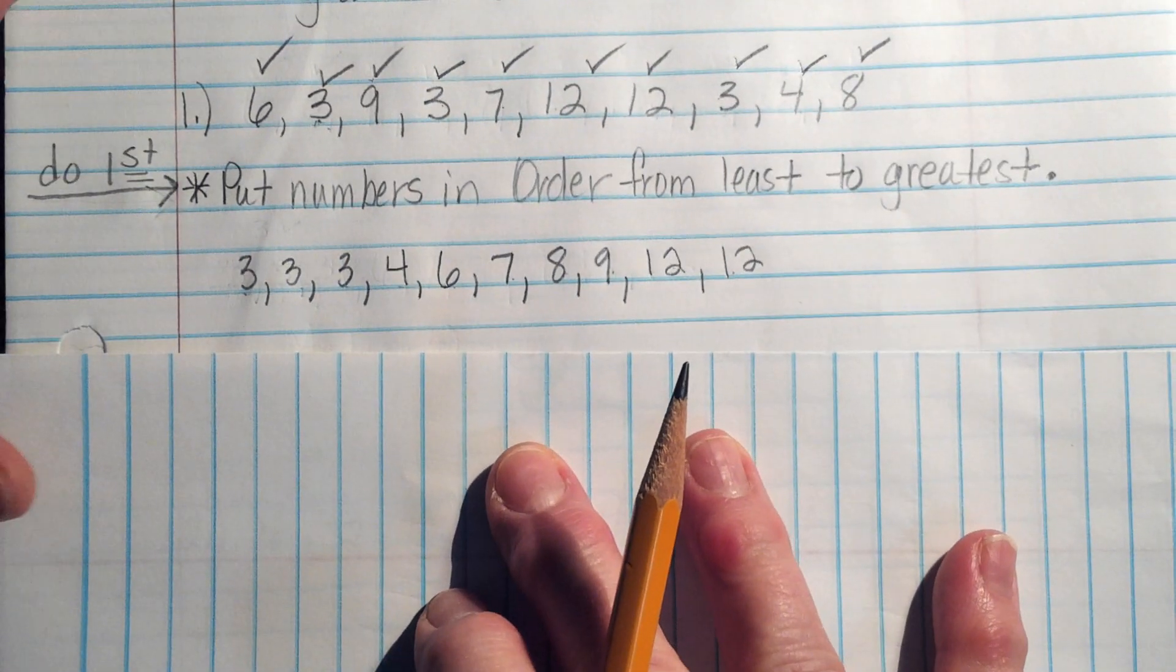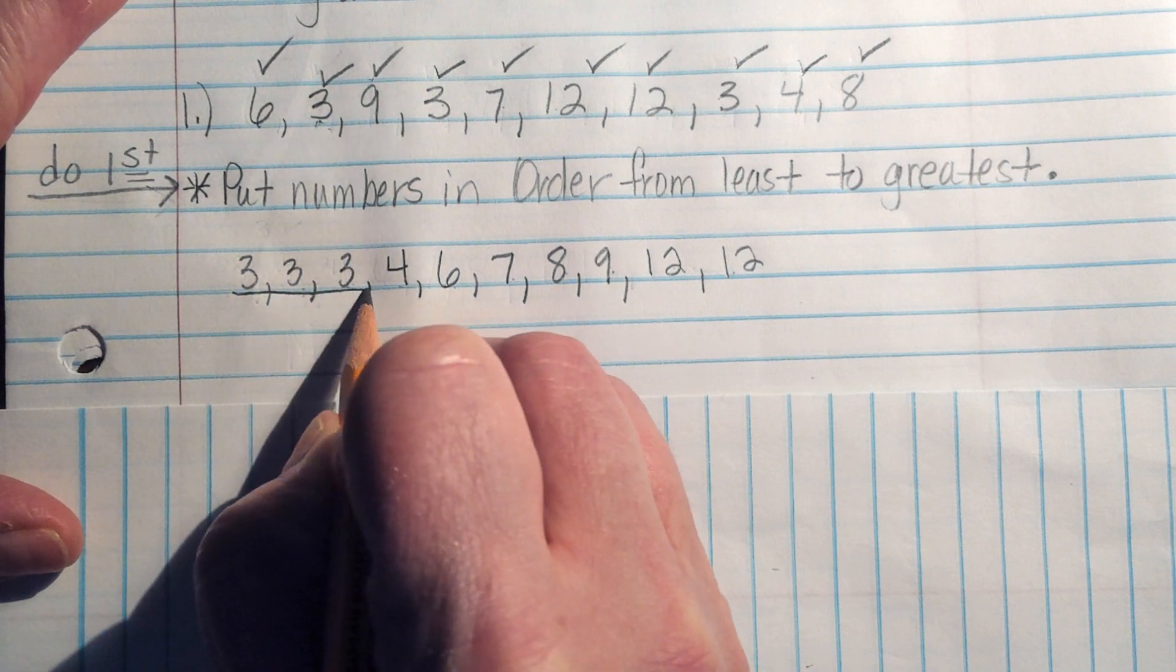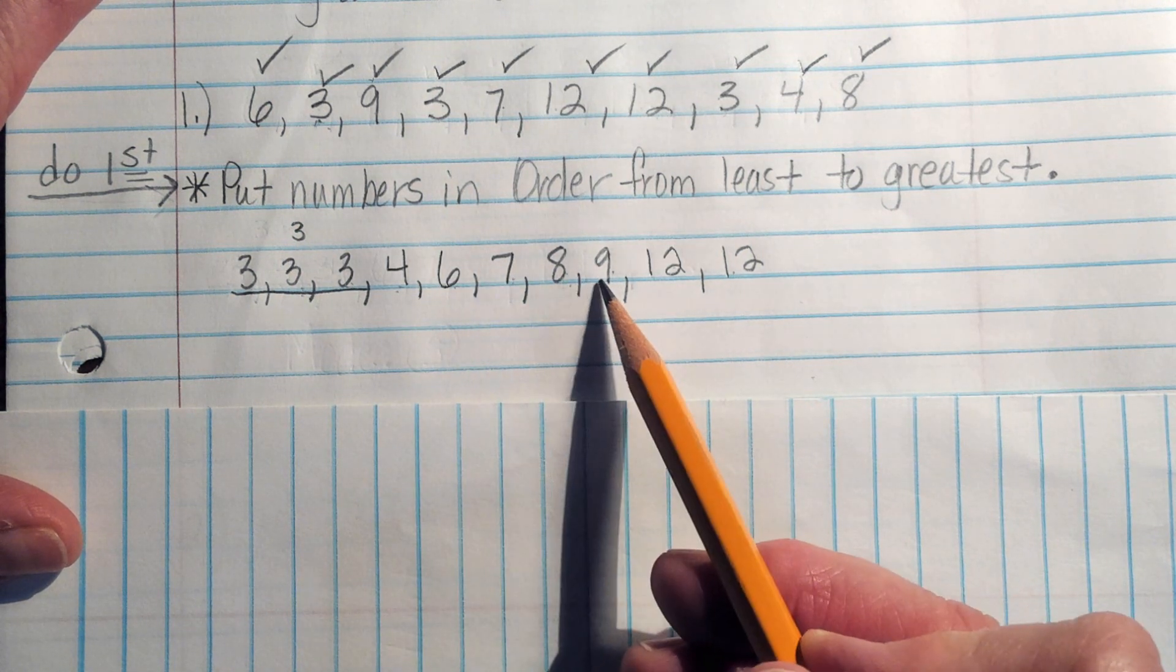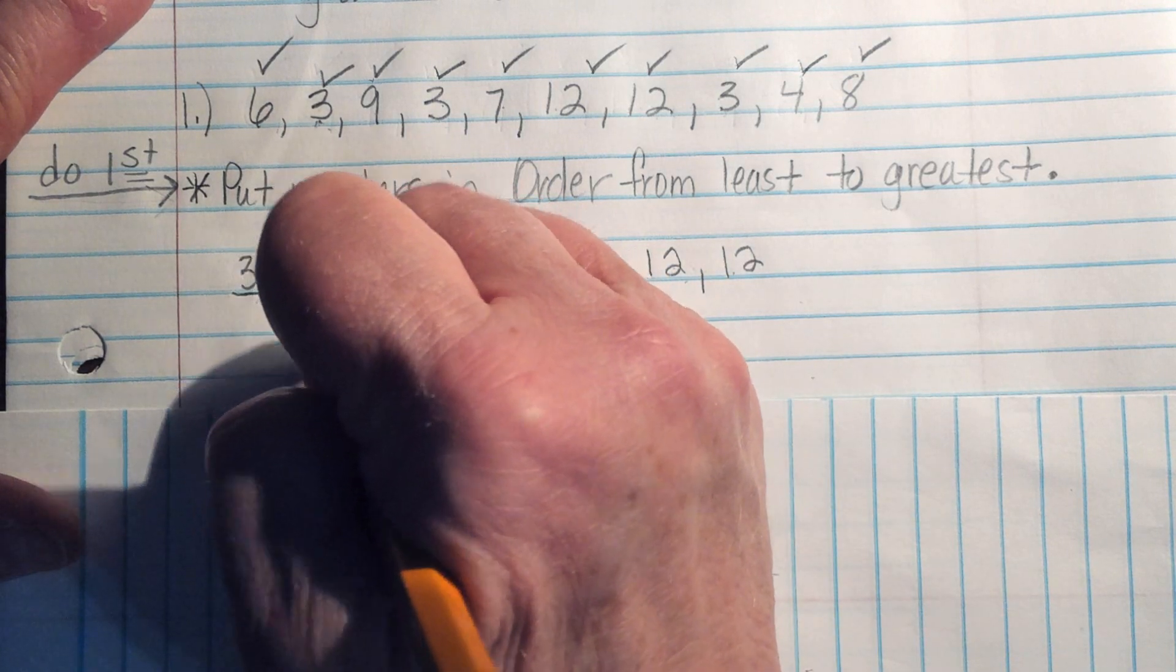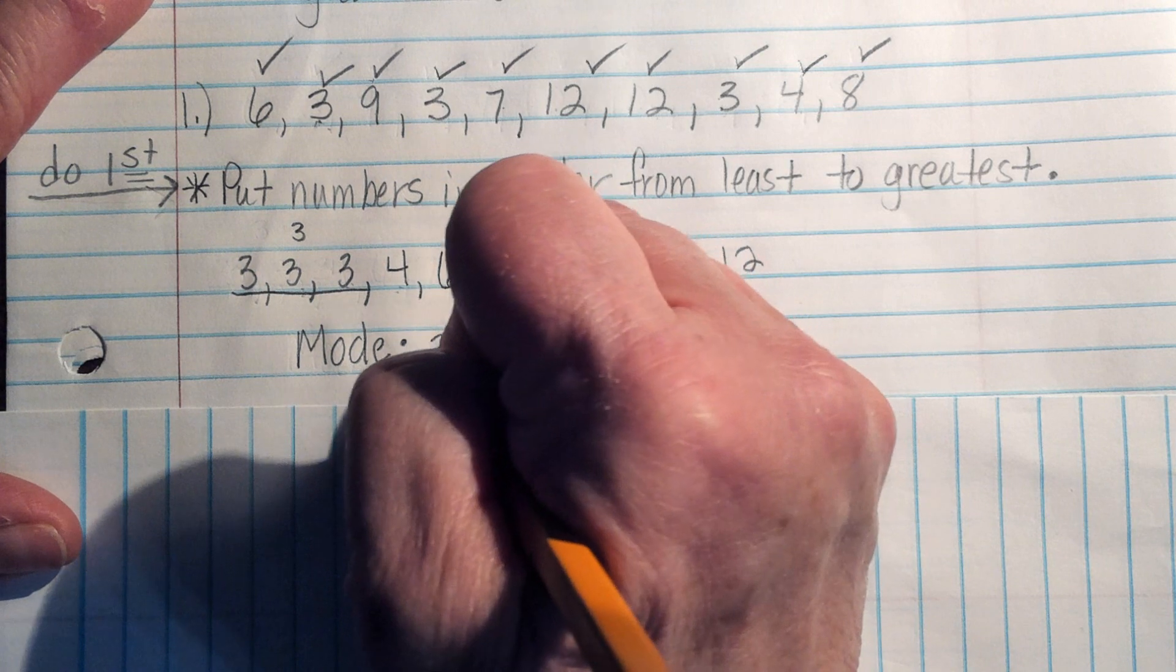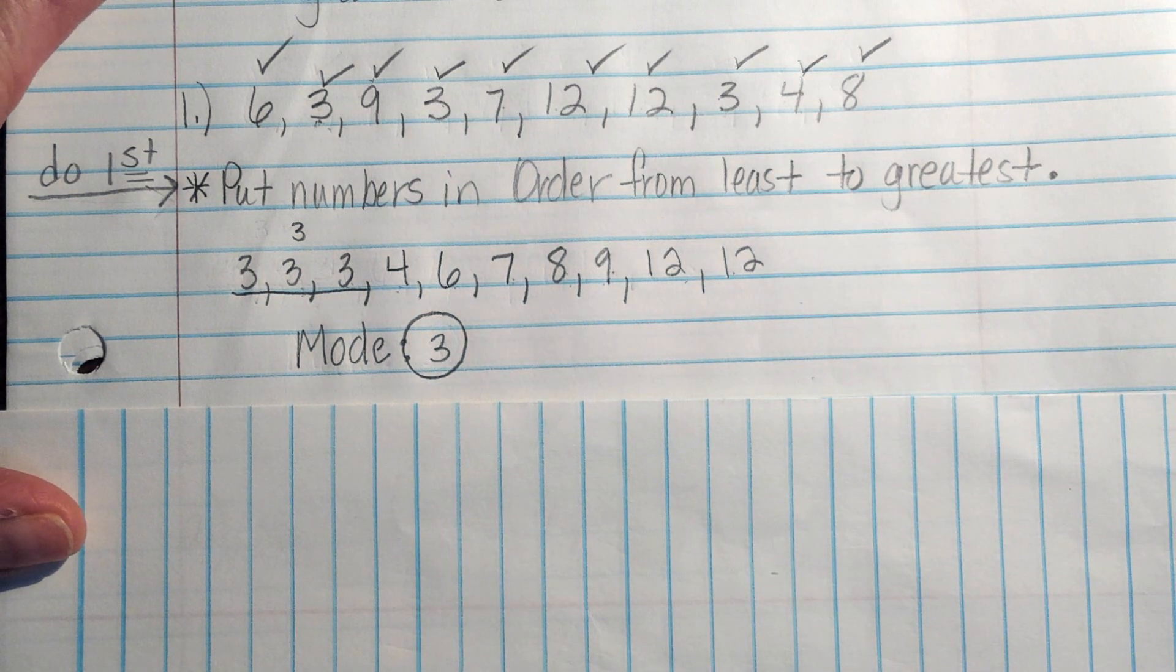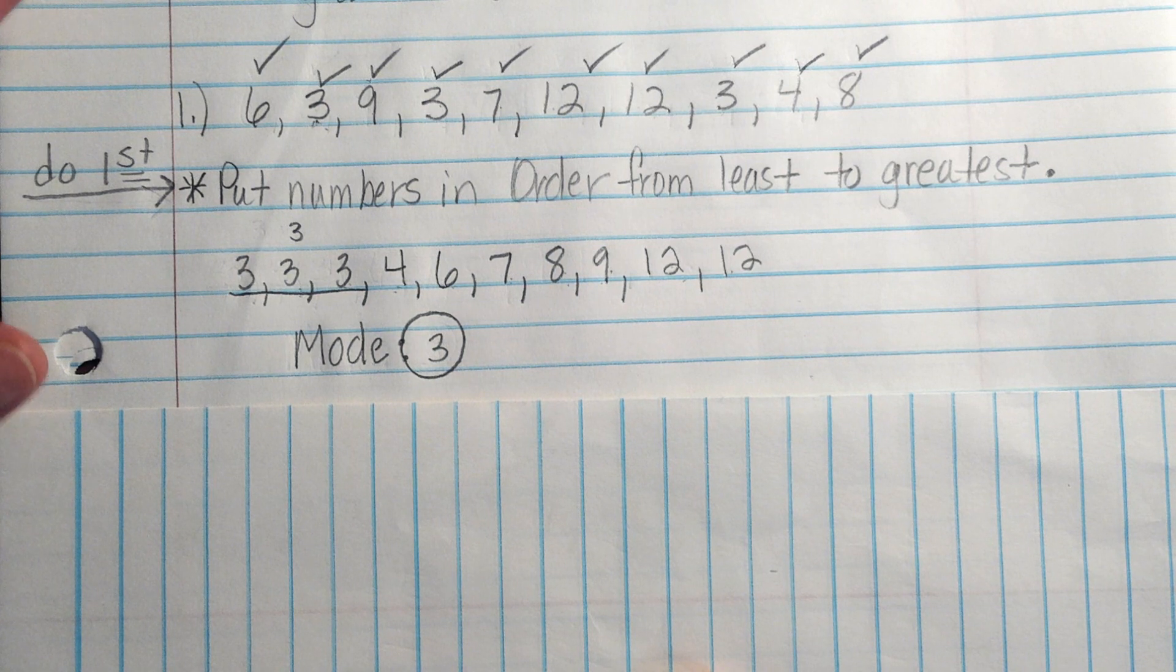Now, let's take a look at our numbers. I notice right off from the very beginning that we've got three threes. Only one four, only one six, only one seven, one eight, one nine, and two twelves. So in this set of data, we're going to say that our mode is three. Three is the number that occurs the most. Okay, sometimes in your set of data, you may have more than one mode, or you may not have any mode at all.